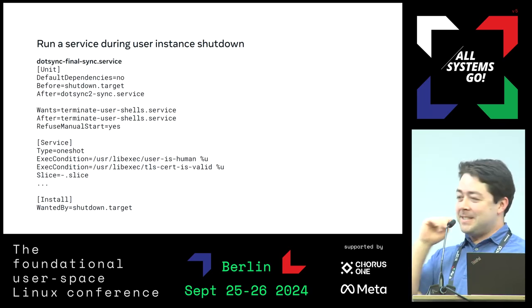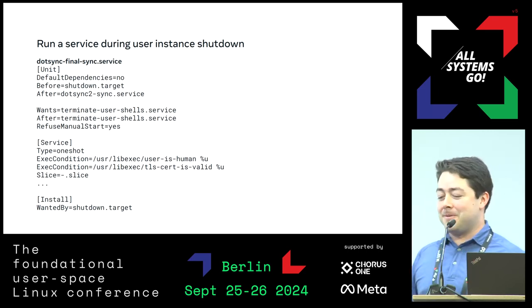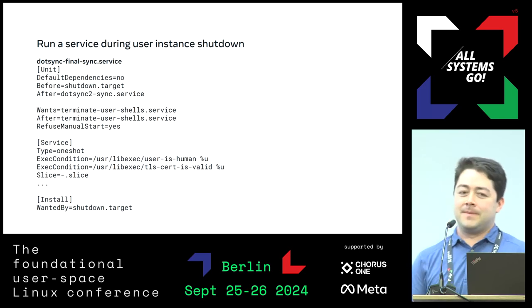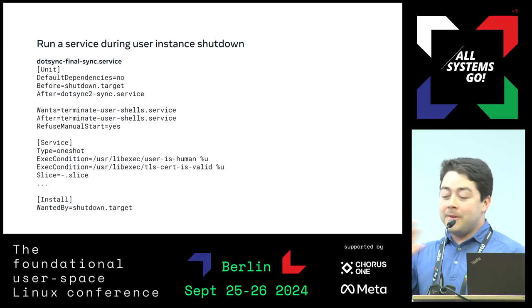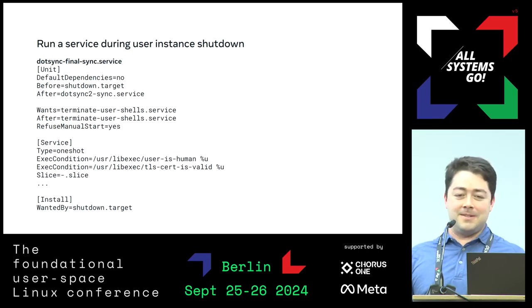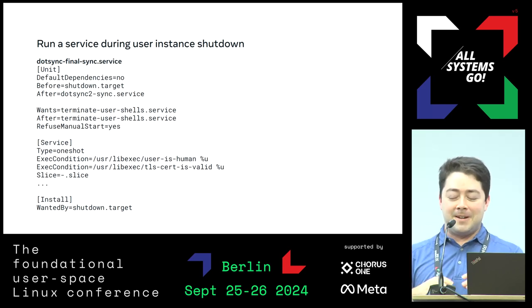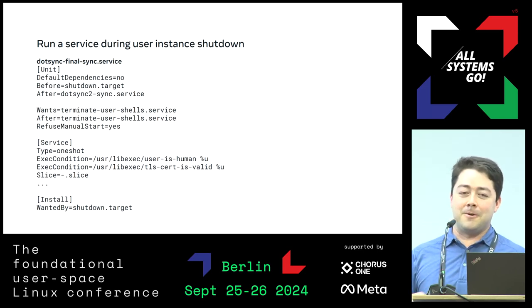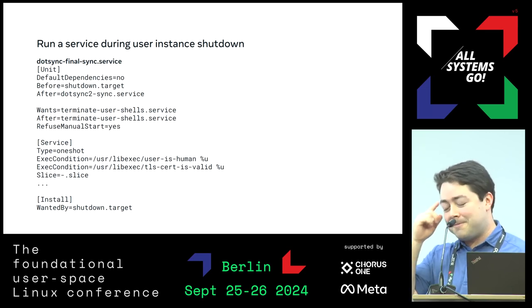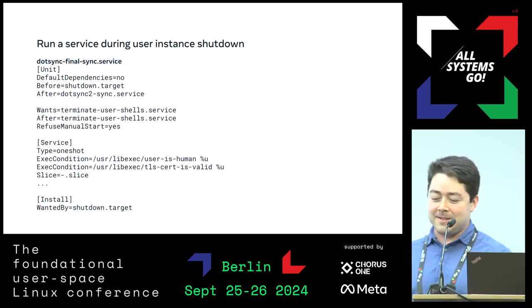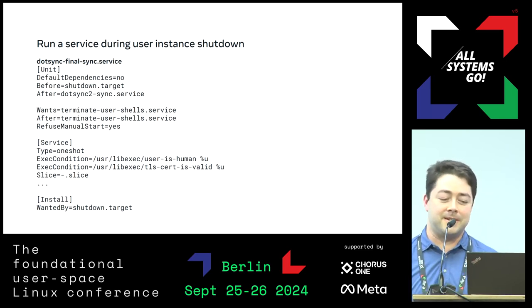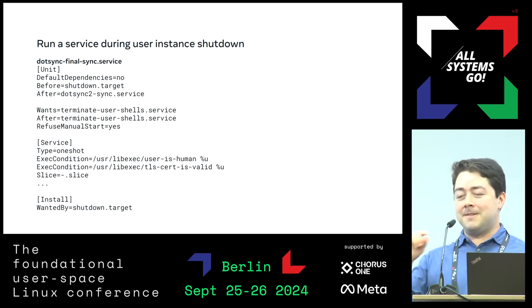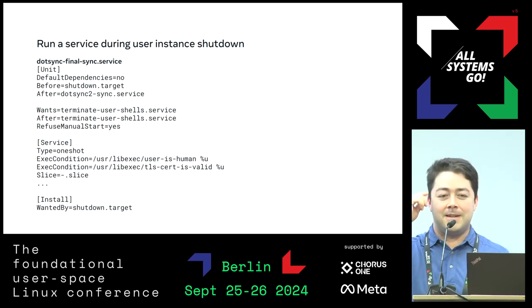The last topic is also related to dot.sync: we actually want to run this service while the instance is shutting down. This took a lot of trial and error. The reason we want to run it during shutdown is to make sure nothing else is going to start up, because we're trying to get the final version of the user's shell history. We also need to make sure all their shell processes exit first, so we wrote a service called terminate-user-shells that makes sure all shell processes go away and flush their history to disk, and then we run after that. We had to turn off DefaultDependencies and use ExecCondition instead of those targets, because we couldn't pull in those targets while shutdown is happening.